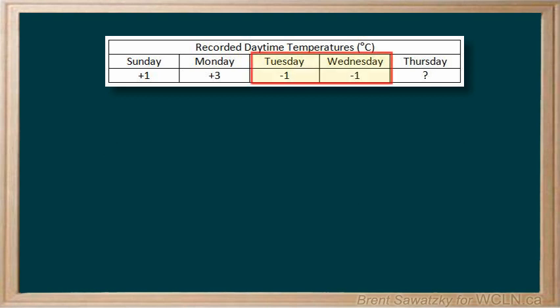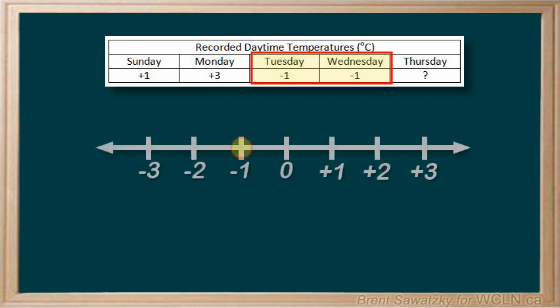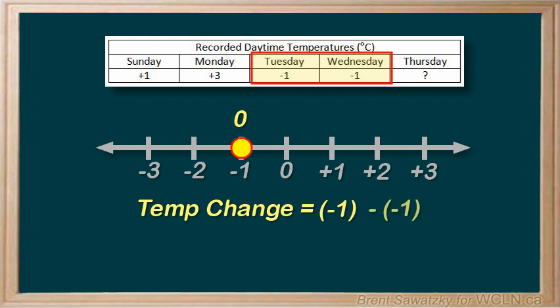Let's look at Tuesday to Wednesday now. Minus one to minus one. On a number line we're now going from negative one here to the exact same place. So in this case the change is zero. To use equations we'd have Wednesday's temperature minus Tuesday's temperature. To remove our brackets we'd have minus one and the minus negative is the same as a positive. So minus one plus one equals zero. No change. Again the results agree.